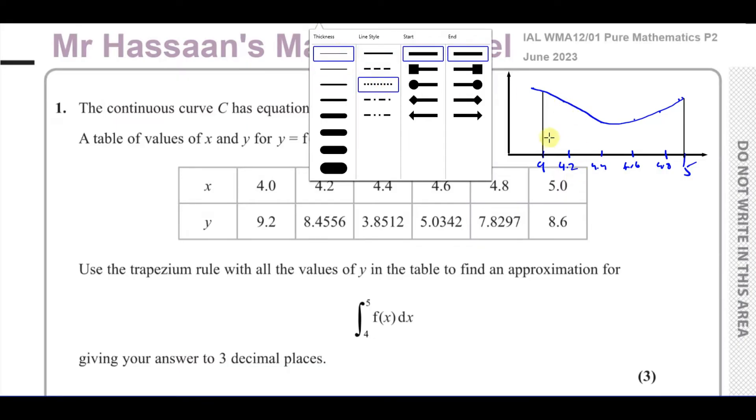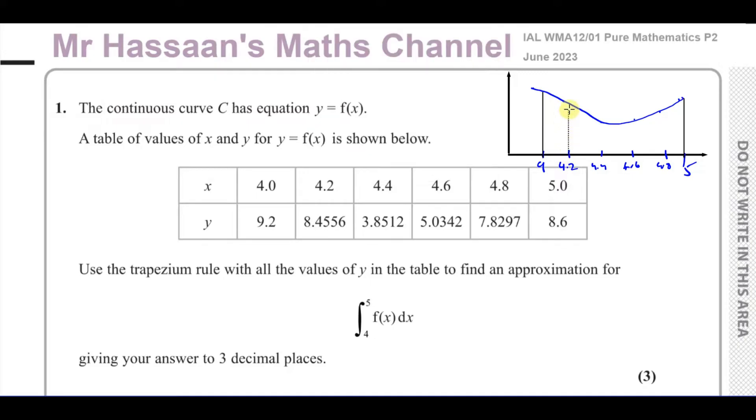So the trapezium rule works in the following way. Basically, what we do is we split up this area into a series of equally spaced trapeziums. Now, they don't look that equally spaced because I haven't drawn it so well, but they're supposed to be equal widths, all right? As you can see, each of them is 0.2 if I drew it properly. So these represent the x-coordinates, and the length of this line, for example, here is 9.2. And the length of this line is 8.4556. That's this point on the y-axis, so it's that high. And so on. So all of these points, their heights, the vertical heights, are these values over here.